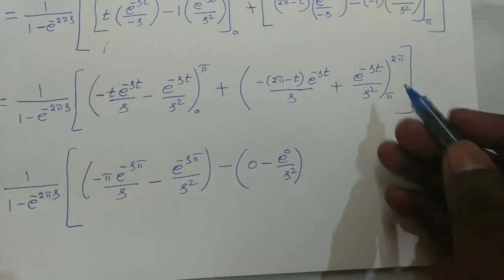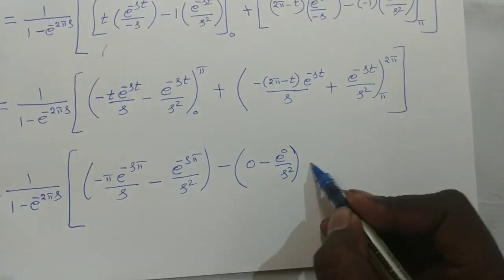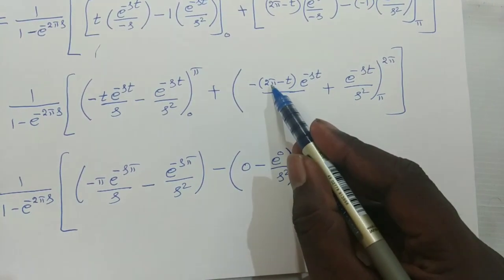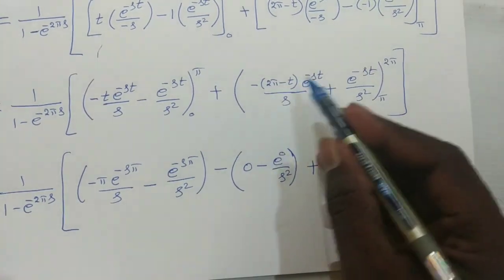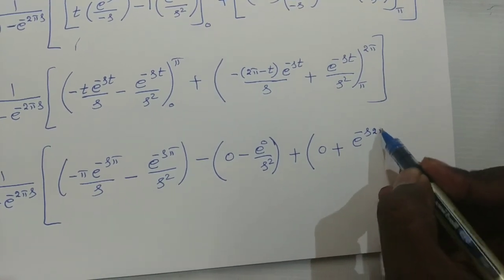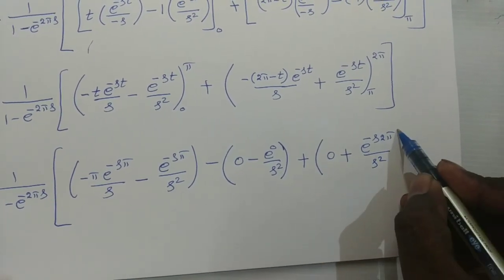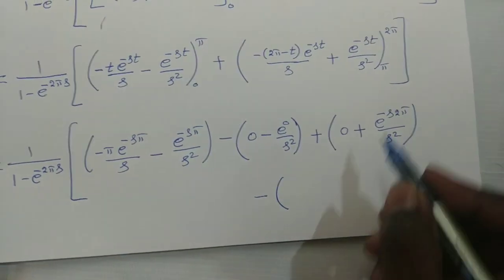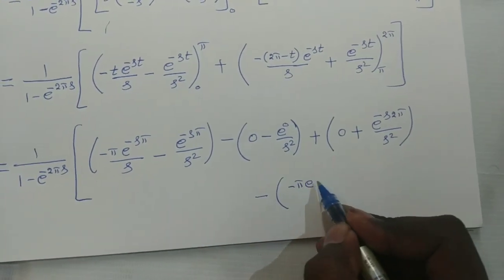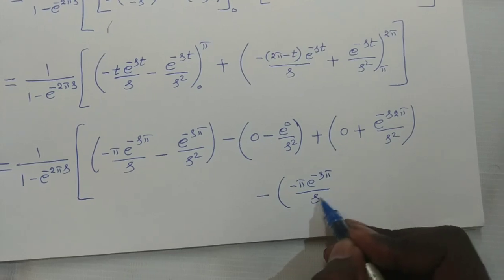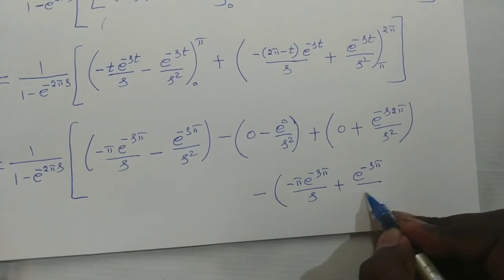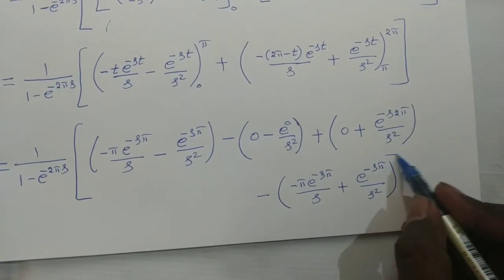For the second integral, substituting upper limit 2π: (2π − 2π) = 0, so that term vanishes; plus e^(−2πs)/s². Substituting lower limit π: −(2π − π)·e^(−sπ)/s + e^(−sπ)/s², which gives −π·e^(−sπ)/s + e^(−sπ)/s².